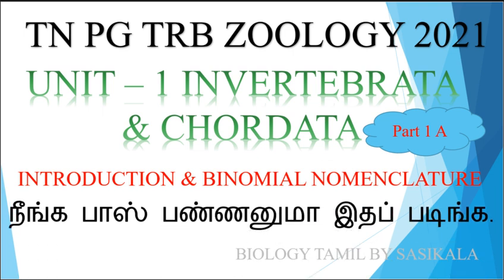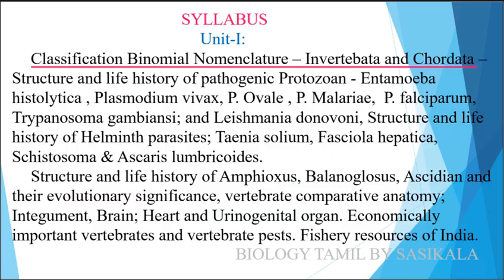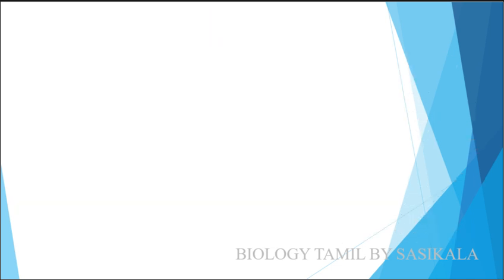Now we will see a video. First, we will see the syllabus. In the syllabus, we will see the classification: Binomial Nomenclature of Invertebrates and Chordate Data. We will see the first line. First: Taxonomy. Taxon means Arrangement.